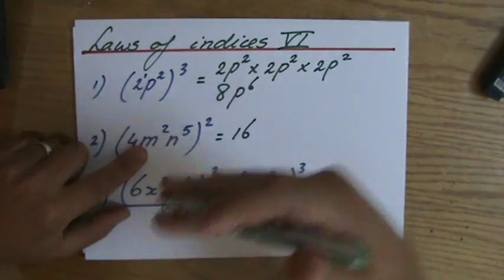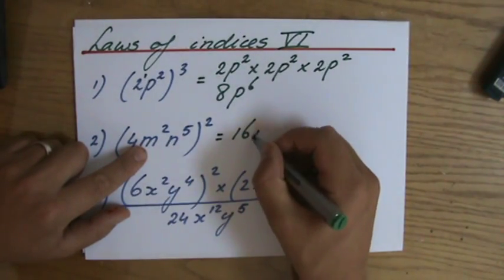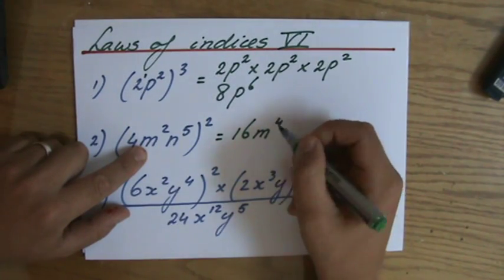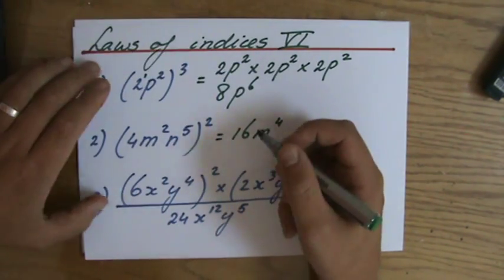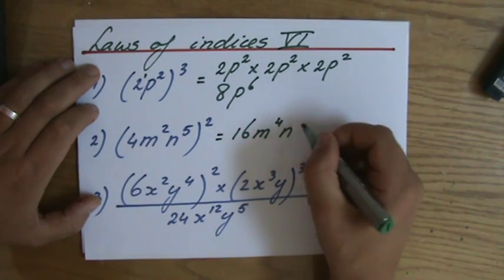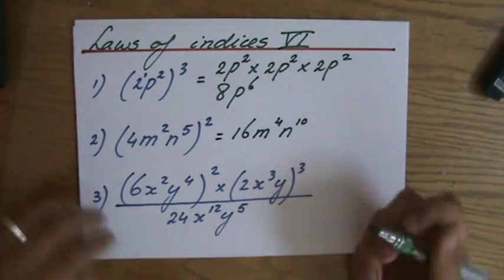m to the power of 2 to the power of 2. So you multiply the indices. m to the power of 4. And n to the power of 5 to the power of 2. So 5 times 2, n to the power of 10. That will be the answer there.